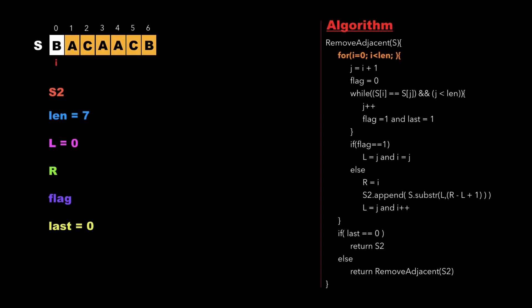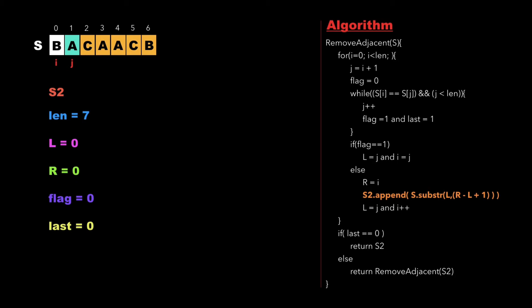We traverse the string from i equal to 0 to length. Initially i is 0, and at each traversal we declare a variable j and initialize it to i plus 1, so j is 1. We initialize flag to 0. We check whether s[i] equals s[j] and j is less than length. Since b is not equal to a, we check whether flag equals 1. Since flag is 0, we move to the else part, update r as i which is 0, and append the substring — that is character 'b' — to string s2. Then we update l as j and increment i.